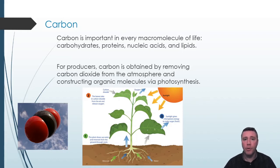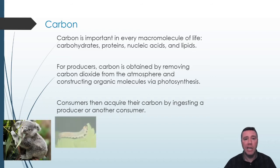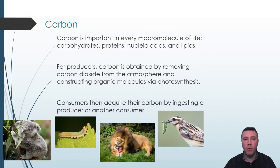The producer can then use those organic molecules for its own growth and reproduction, or they can be stored for later use. On the other hand, consumers like herbivores can eat the plant material to obtain those organic molecules for themselves. Other kinds of consumers, like omnivores and carnivores, can obtain those organic molecules by eating plants or animals, or just by eating other animals, respectively.